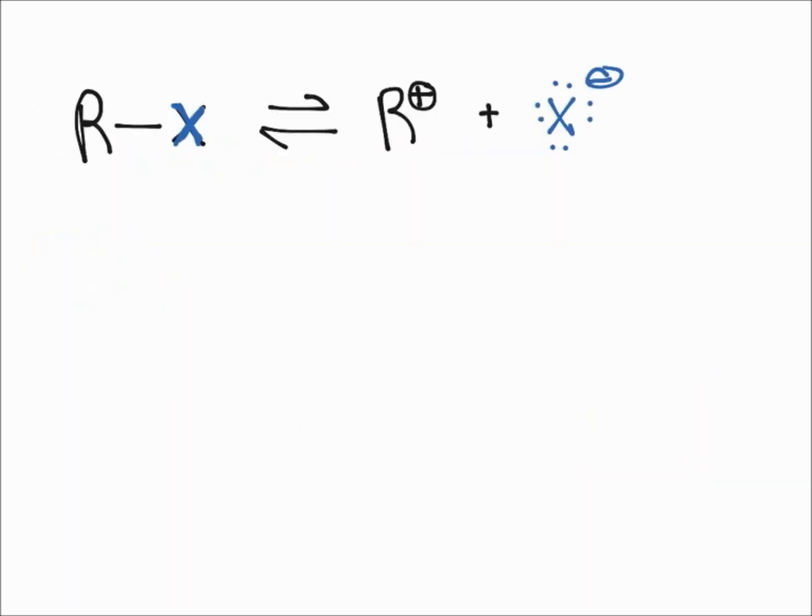And so first let's recall the rate determining step of the SN1 reaction. And so that would be the formation of the carbocation, which is what I've drawn right here.